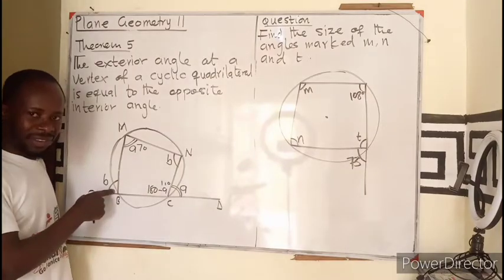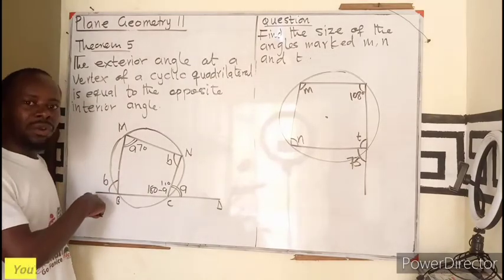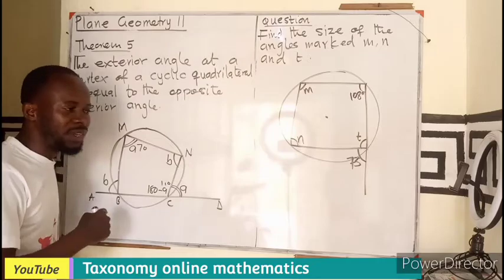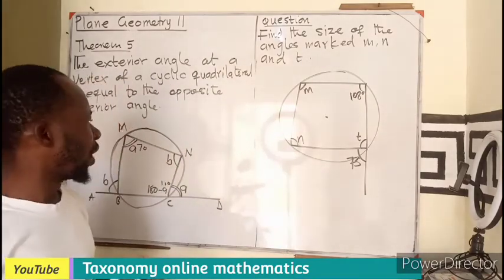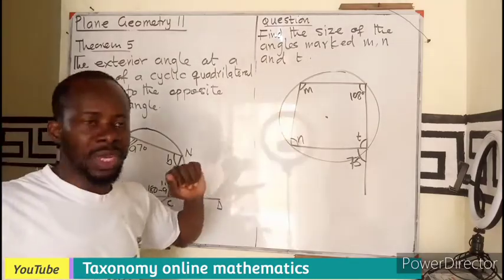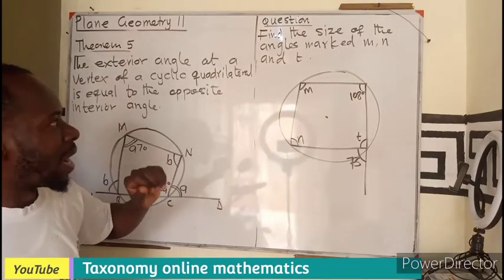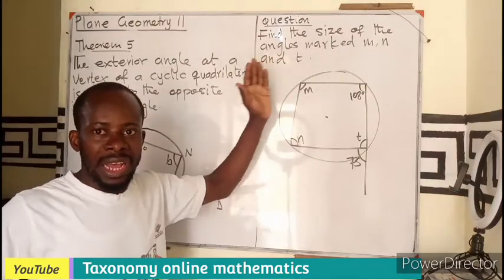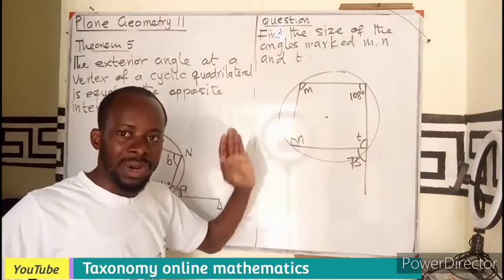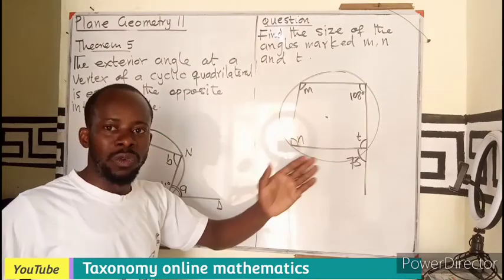The cyclic quadrilateral at the vertices, the exterior angle equals the opposite interior angle. So now let's see how we can use this property to solve this question. Find the size of the angles marked M, N, and T. So we can see this is a complete cyclic quadrilateral with no line dividing to form a triangle.